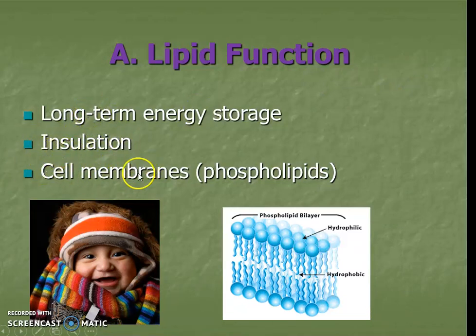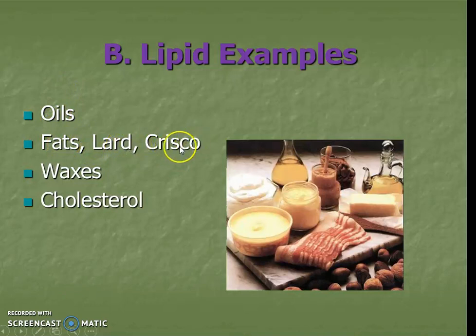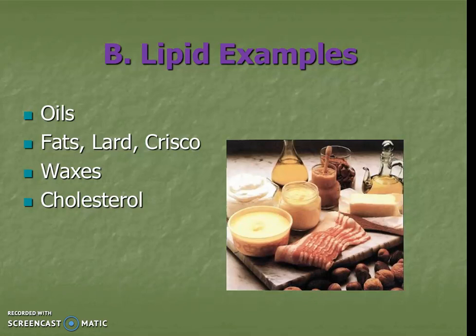We'll also learn that the outside part of a cell is made up of these fats as well. Examples in our food products include oils, multigrain fats, lard, Crisco, waxes, and cholesterol — all these things are fats. We can see some food examples right here. Make sure as you take notes, if something's surprising to you, circle it or put a question mark so we can ask about it in class.